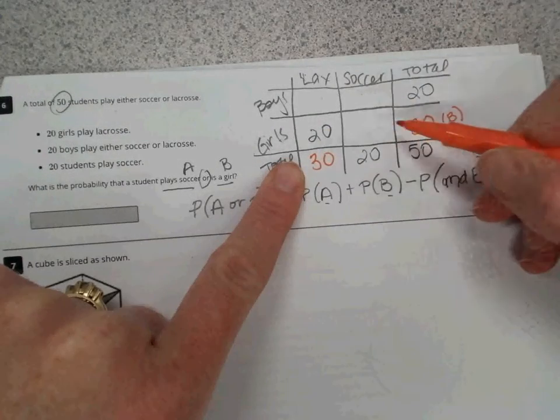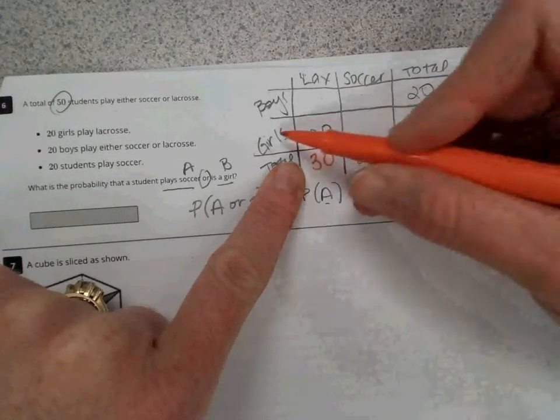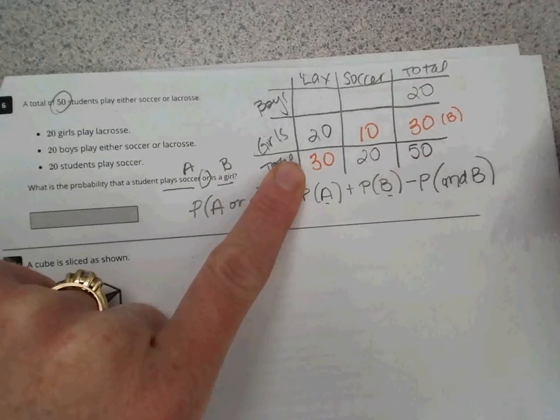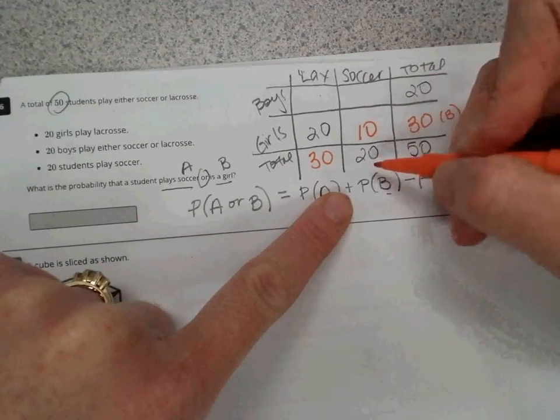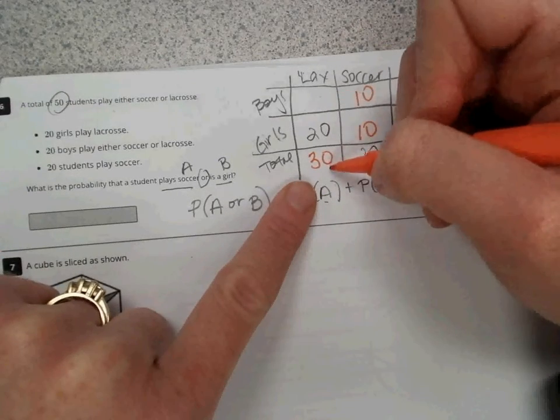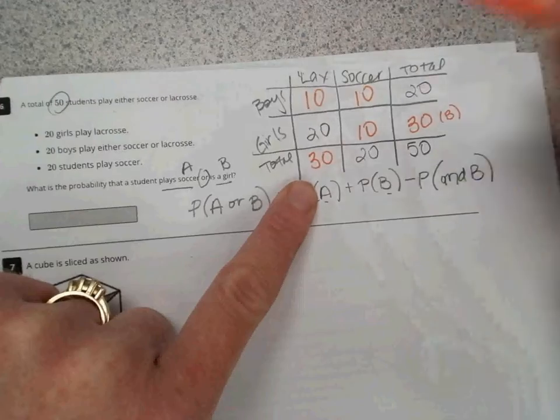Then we can find soccer girls: 30 minus 20 is 10. Our soccer boys would be 20 minus 10 is 10. And our lacrosse boys would be 30 minus 20 is 10.